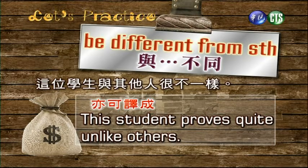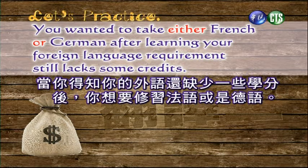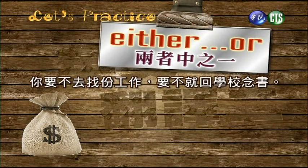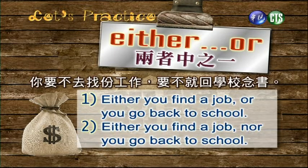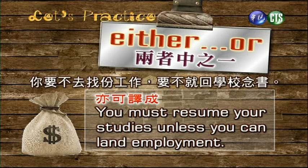You wanted to take either French or German, after learning your foreign language requirement still lacks some credits. 当你得知你的外语还缺少一些学分后，你想要修习法语或是德语。我们来学either...or，两者中之一。你要不去找份工作，要不就回学校念书。Either you find a job or you go back to school. Nor is used with neither, so the first one has to be right. 对，我们either用or，neither才配nor，这不能搞混了。好，另外翻翻看：You must resume your studies unless you can land employment.